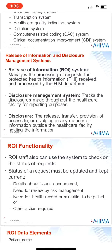The HIM department receives requests for copies of health records on a daily basis. These requests must be logged into the information system to allow for tracking on the status of the request. The release of information system is designed to manage the processing of requests for protected health information received and processed in the HIM department. It continues to track the request as it is processed and acts as a historical database of all requests, ultimately used to generate reports.